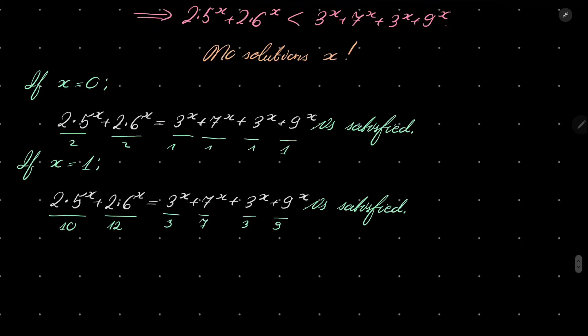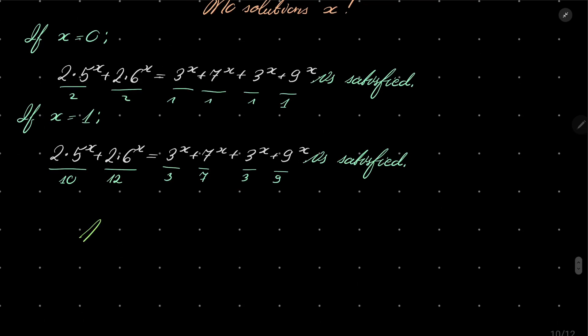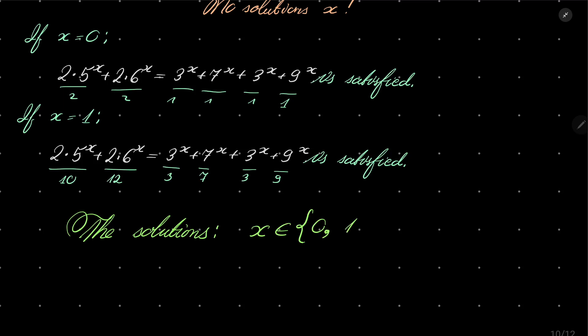All in all, we have only two solutions: x is either 0 or 1. And that closes our problem. Jensen's inequality, as you have seen, is very useful very often. Thank you very much for watching, and I will see you next time. Goodbye.